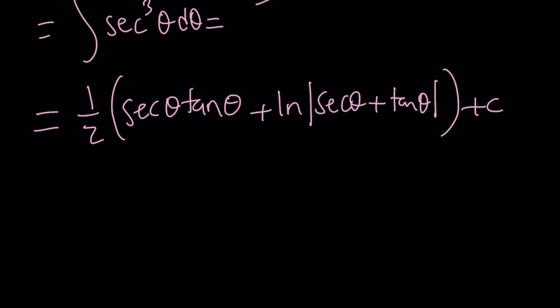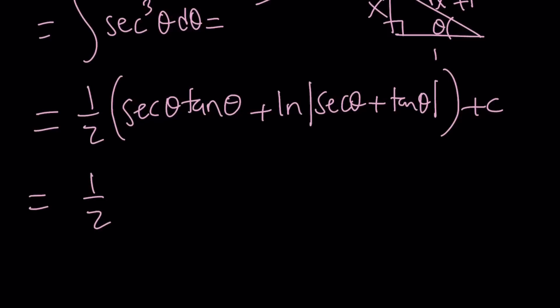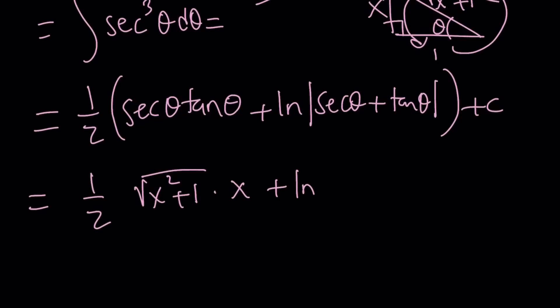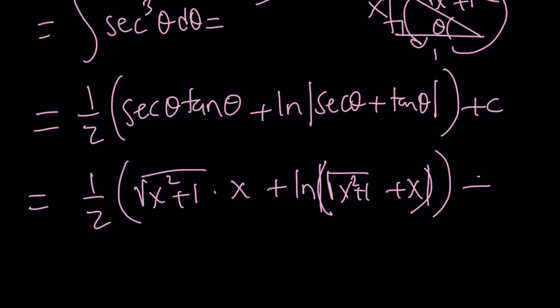Now plug in the values. tanθ = x, so the opposite side is x and the adjacent is 1, making the hypotenuse √(x² + 1). Secant is 1/cosine, so secθ = √(x² + 1). Therefore the answer is ½ · √(x² + 1) · x + ½ ln(√(x² + 1) + x) + C. You don't need the absolute value because this quantity is always positive.